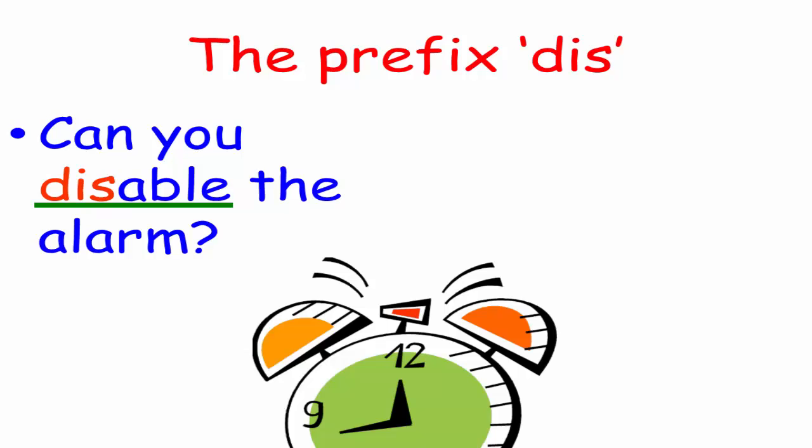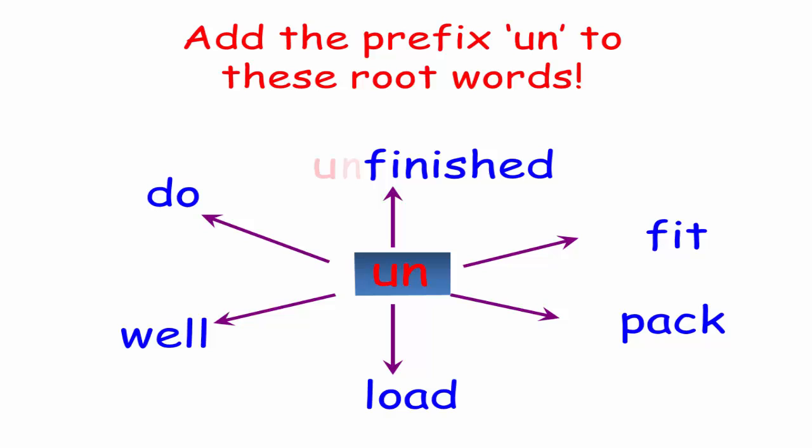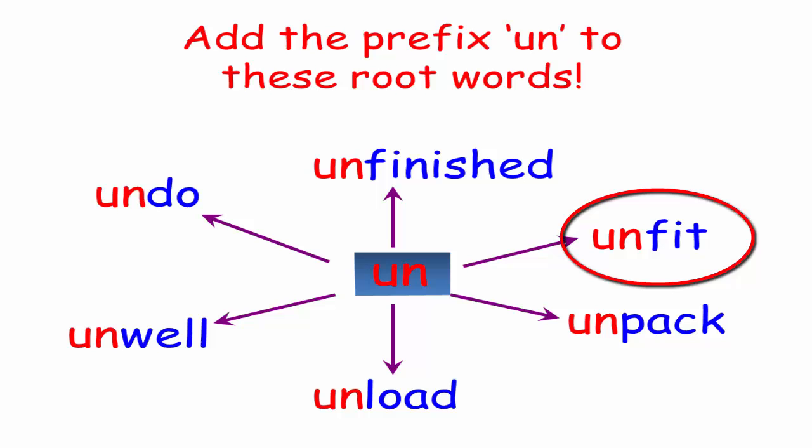Now look at these words. What is the appropriate prefix that can be used? Perfect. It is un. So we are going to add the prefix un to the root words here. To say that something is not finished, we say it is unfinished. Pack becomes unpack, which is the opposite of pack. Unload. Unwell. Undo. And finally, unfit, which means not fit.